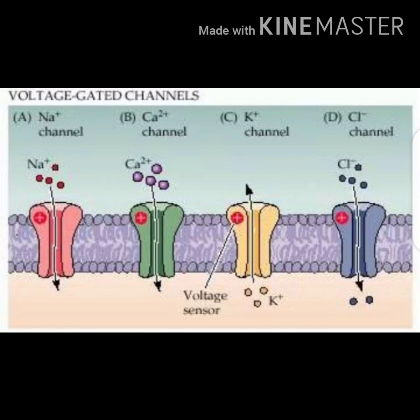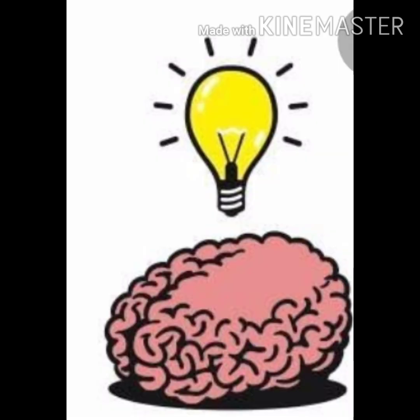In this picture, sodium, calcium, potassium, and chloride channels are shown in different colors, indicating that each channel allows only specific ions. I'll end this session with a question: how are ion channels classified based on the gating system? You can answer in the comment box. Thank you for listening.